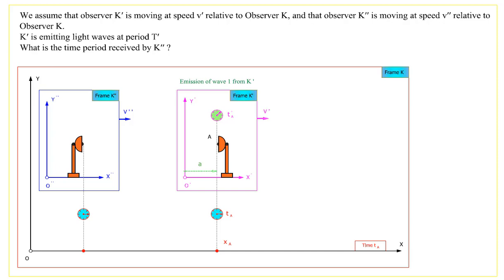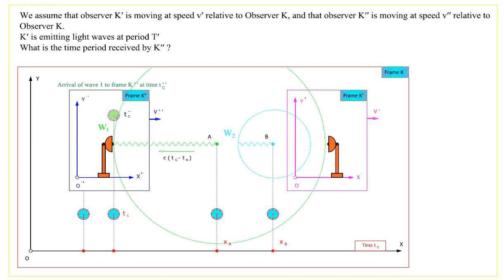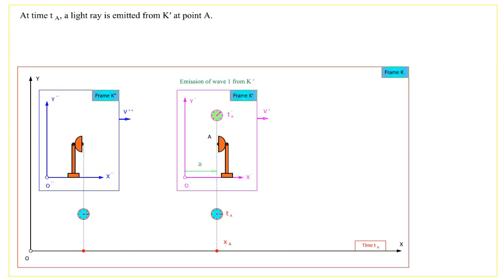Observer K' is emitting light waves at period T'. What is the time period received by observer K''? At time Ta, a light ray is emitted from K' at point A.